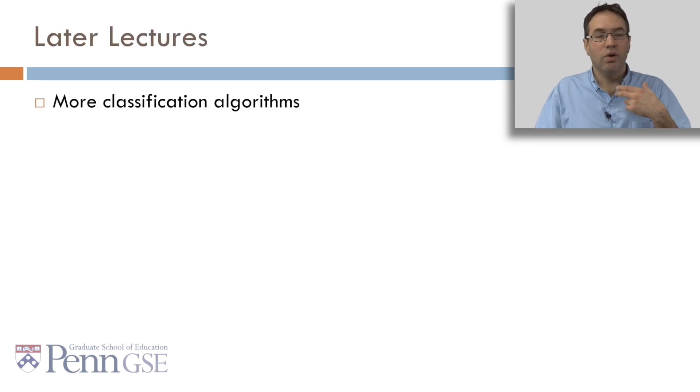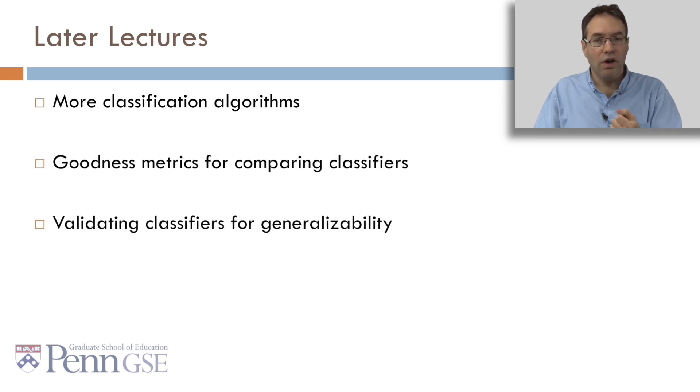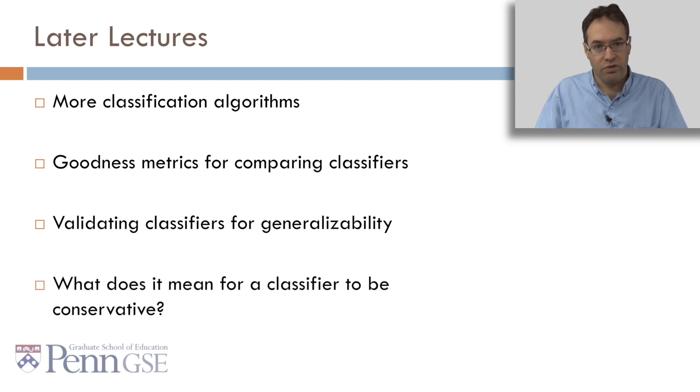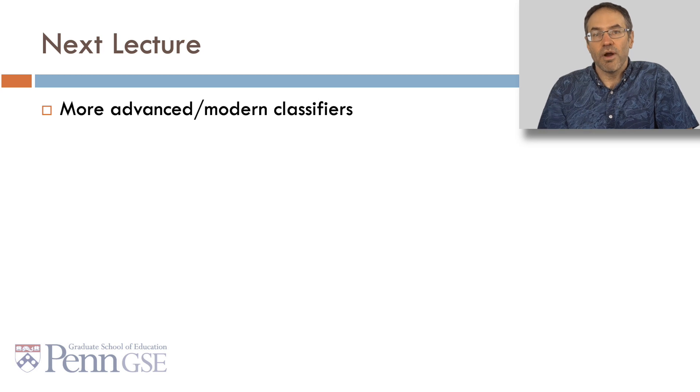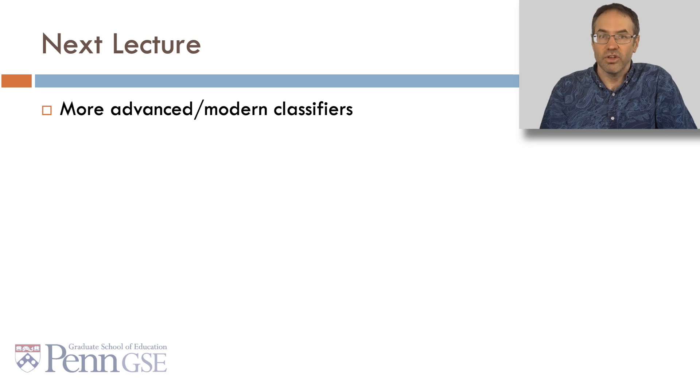Now in later lectures, we're going to talk about more classification algorithms. We're going to talk about goodness metrics for comparing classifiers, validating classifiers for generalizability, and what it means for a classifier to be conservative. That wraps up our first lecture on classifiers. In our next lecture, we'll discuss more advanced, more modern classifiers. See you next time!